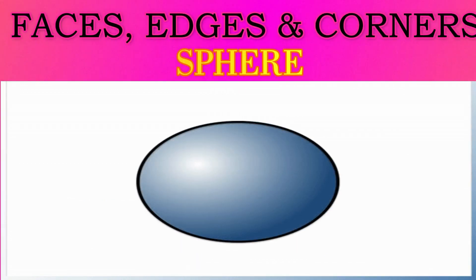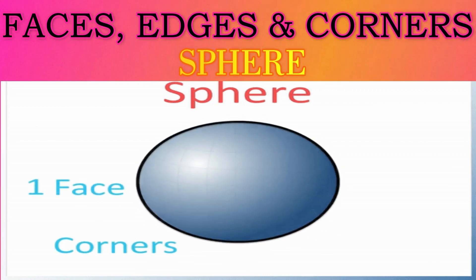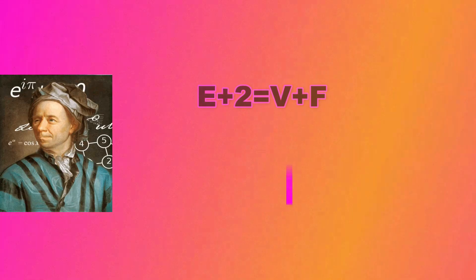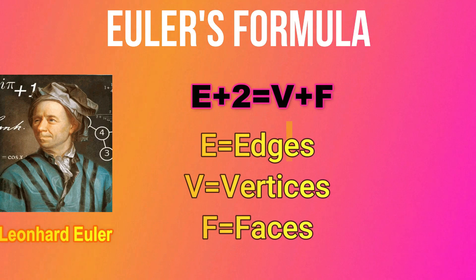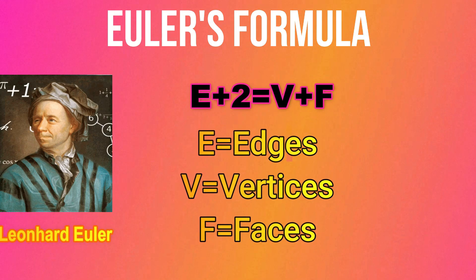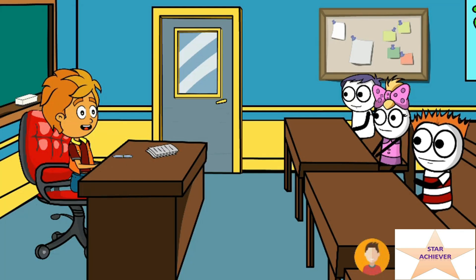For a sphere: it has one face, zero corners, and zero edges. Euler is a famous mathematician who has given the formula that Edges plus 2 equals Vertices plus Faces. I hope now we can start the first exercise.